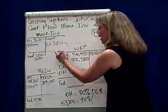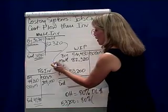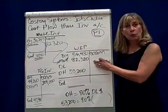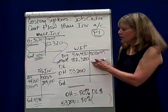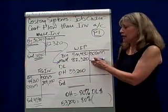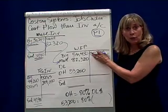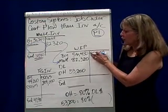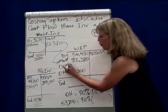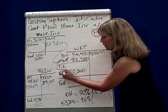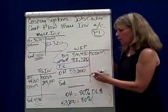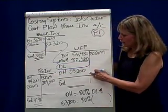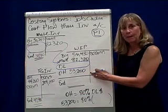That $82,320 then flows over into work in process as a debit. It's there with beginning work in process of $56,480. We don't know what direct labor is, but we do know that overhead is $53,200.